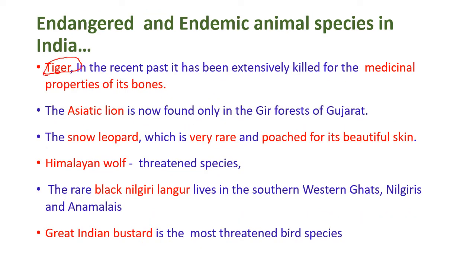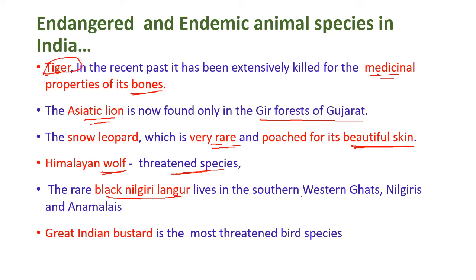The tiger has been extensively killed for the medicinal properties of its bones. The Asiatic lion is now found only in the Gir forests of Gujarat. The snow leopard is a very rare species, poached for its beautiful skin. The Himalayan wolf is also a threatened species. The rare black Nilgiri langur lives in the southern Western Ghats and Nilgiris, and the Great Indian Bustard is the most threatened bird species.